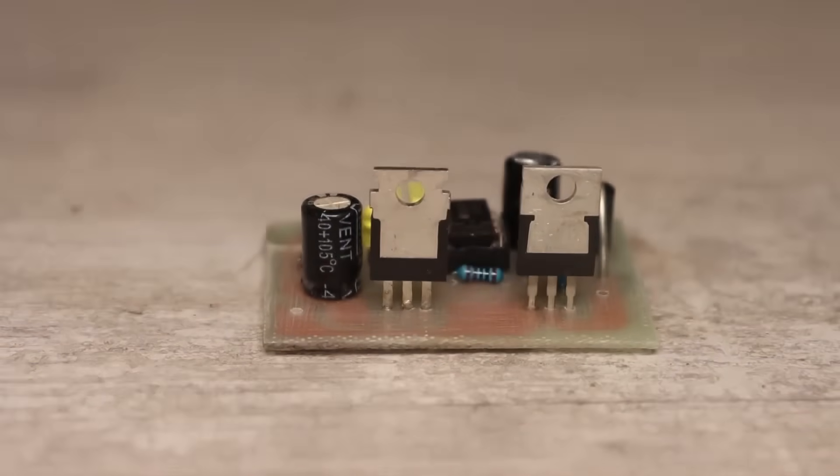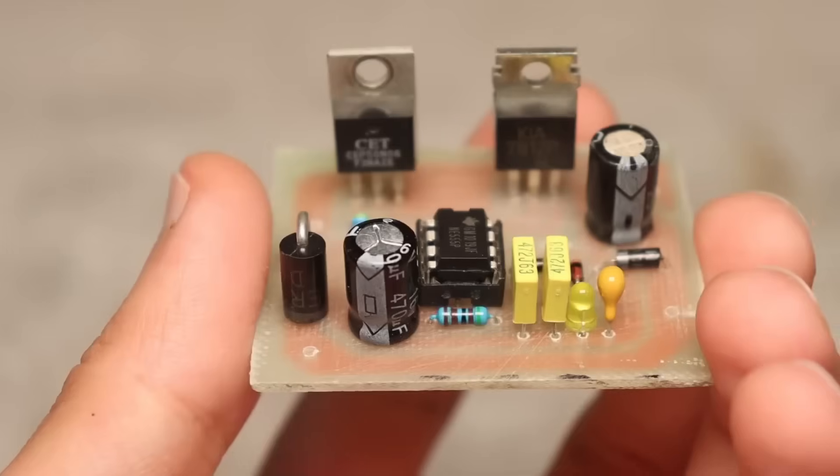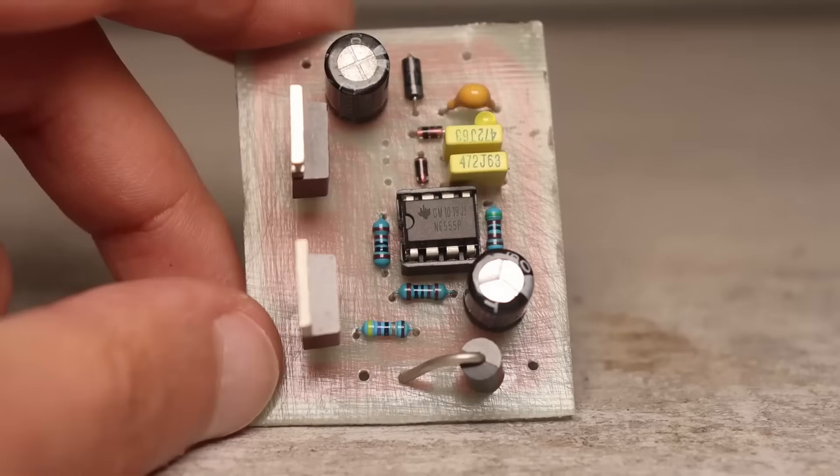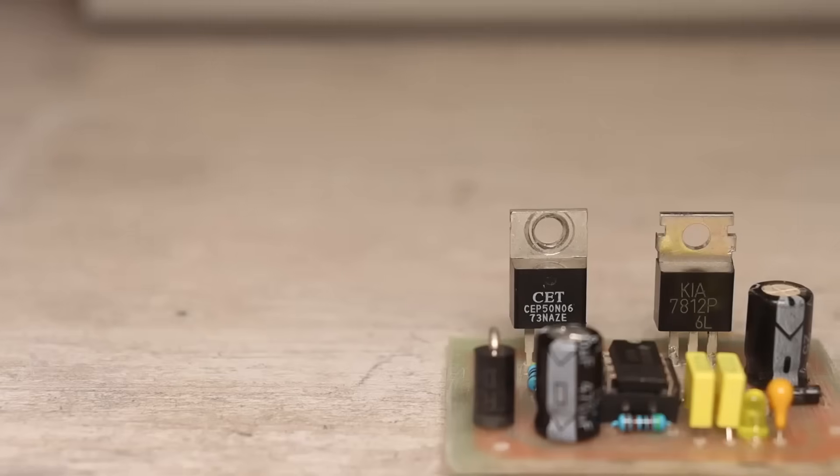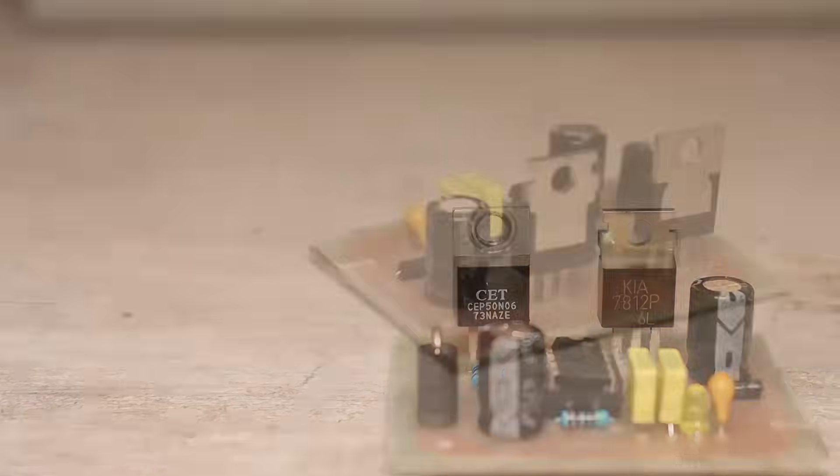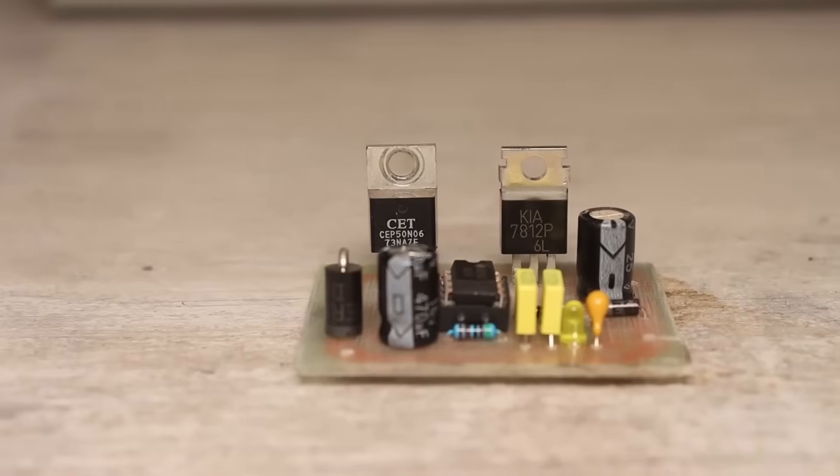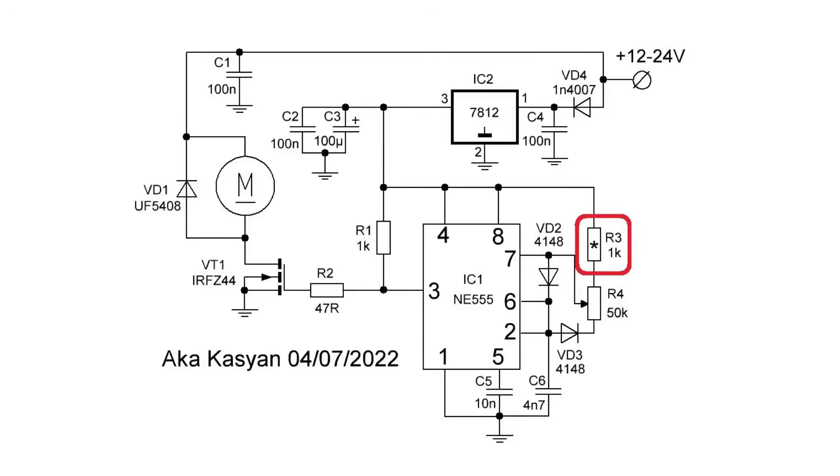As a motor speed controller, there will be a homemade PWM controller. The circuit is simple. I've shown it multiple times. The controller is built on the basis of a 555 timer, which controls a fairly powerful MOSFET IRFC44, but you can use another one. In my case, there's an equivalent. Without any strain, this circuit can work with currents of 10 amps or more, meaning it has a significant margin. This resistor sets the limit, and it needs to be adjusted.